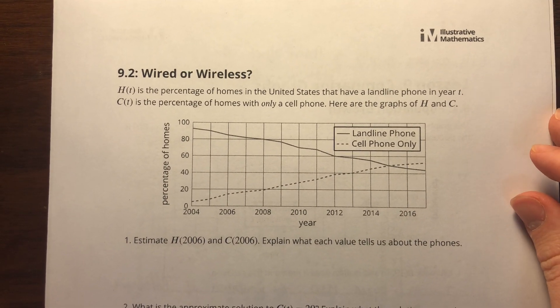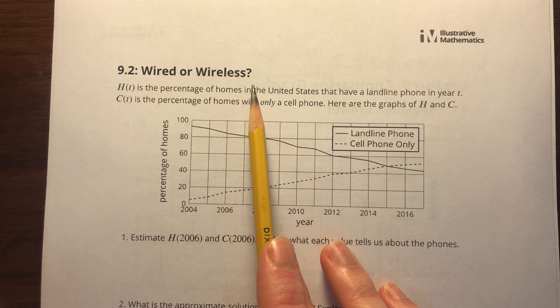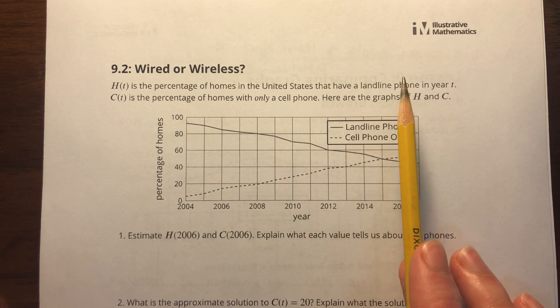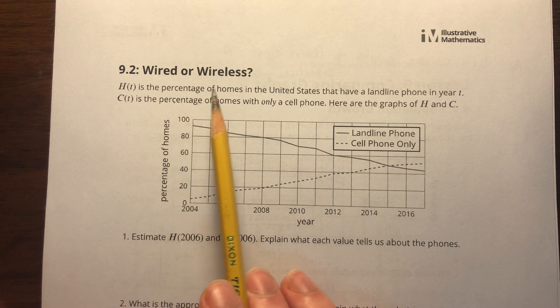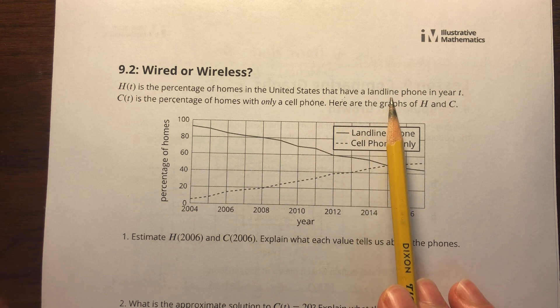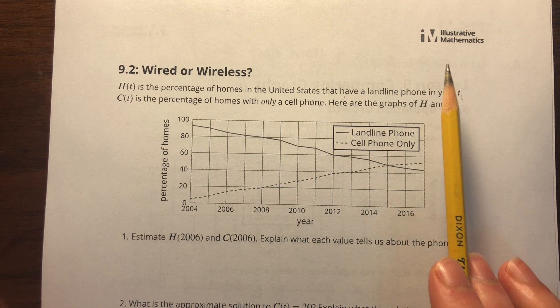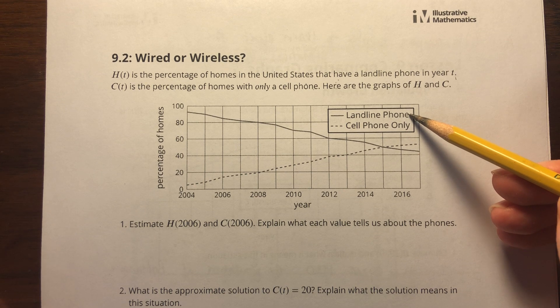Problem 9.2, Wired or Wireless. H(t) is the percentage of homes in the United States that have a landline phone in year t. C(t) is the percentage of homes with only a cell phone. Here are the graphs of H and C.